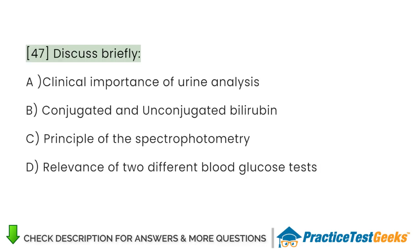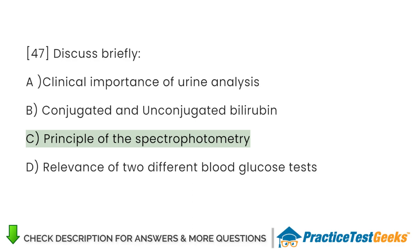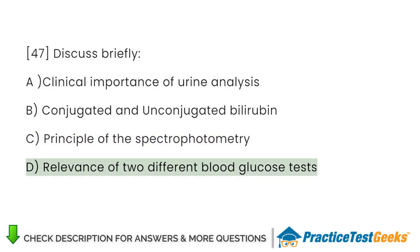Discuss briefly: A. Clinical importance of urinalysis. B. Conjugated and unconjugated bilirubin. C. Principle of spectrophotometry. D. Relevance of two different blood glucose tests.